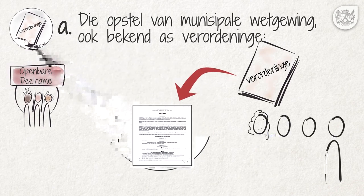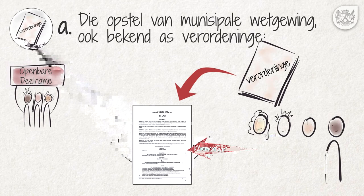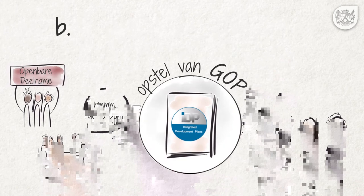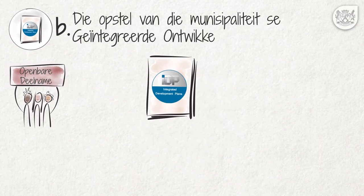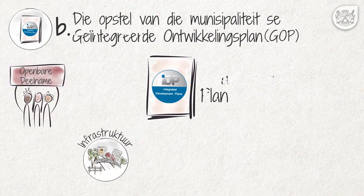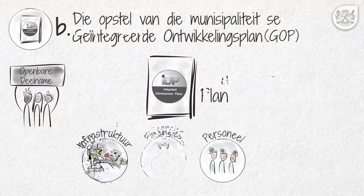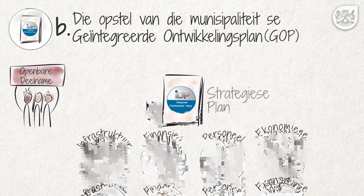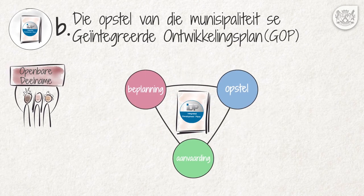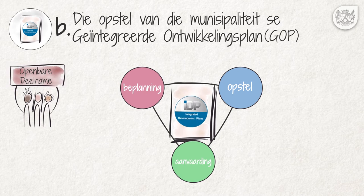Alle voorgestelde verordeningen moet openbare commentaar geadverteer word sodat die mense vertolk is. Die Munisipale Raad moet sulke commentaar oorweeg. B: Die Opstel van die Munisipaliteit se Geïntegreerde Ontwikkelingsplan. Die Geïntegreerde Ontwikkelingsplan, kortweg GOP, is die Munisipaliteit se primêre strategiese plan ten opsigte van sake soos infrastruktuur, finansies, personeel en ekonomiese ontwikkeling. 'n Munisipaliteit moet die gemeenskap deur middel van die wykskomitees en openbare vergaderings by die beplanning, opstel en aanvaarding van die GOP betrek.